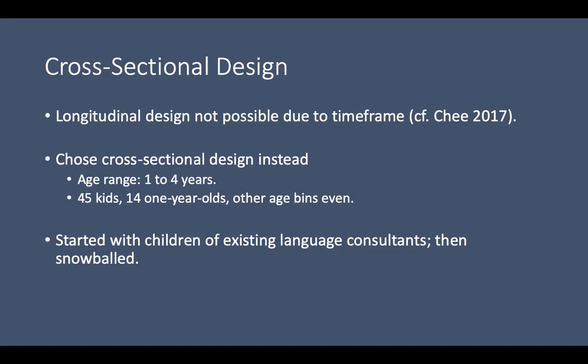In my cross-sectional design, I targeted kids within the phase of primary first language acquisition — from about twelve months old to just under five years old. I recruited forty-five children: fourteen one-year-olds, and ten or eleven each for two-, three-, and four-year-olds. I began with the kids of people who had already worked with me as language consultants, then used a snowball methodology — asking each participant to refer sisters, neighbors, or others. I was able to iterate out the recruitment and record all forty-five kids over about ten weeks.